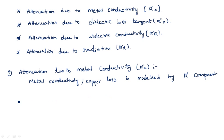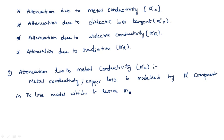This metal conductivity loss is modeled by the R dash component in the transmission line model, which is the series resistance per unit length.